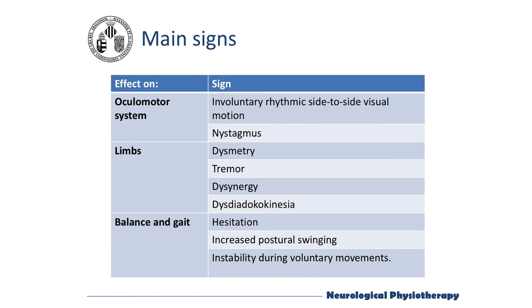After reviewing the neurophysiology, we will explain the main clinical signs of cerebellar ataxia. In relation to the oculomotor system, we can find nystagmus — involuntary rhythmic side-to-side motion of the eyes in horizontal visual tracking. On the movement of the upper and lower limbs there can be dysmetria, that is, exceeding or not reaching an object with movement planning being affected. Tremor can be of action — during a movement — and of intention, which increases when closer to the target; postural tremor can also occur. Dyssynergy refers to poor coordination of joint movements, and dysdiadochokinesia is characterized by slow movement when quick alternating movements of the limbs are required.